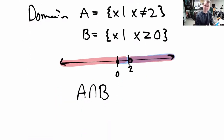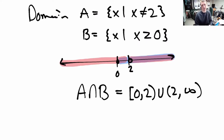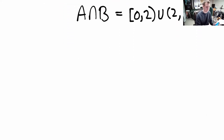The domain is the intersection of the two, which — just looking at the number line — is from 0 to 2, not including 2, together with 2 to infinity. We look at both sets individually, then find where they have points in common. That is the domain for the sum, the difference, the product — or the quotient, except where the denominator is zero.